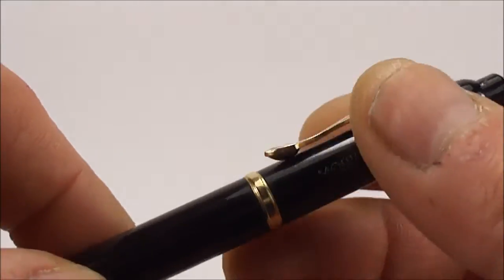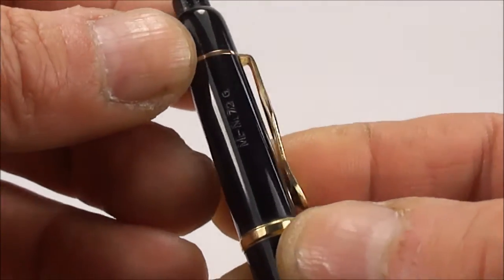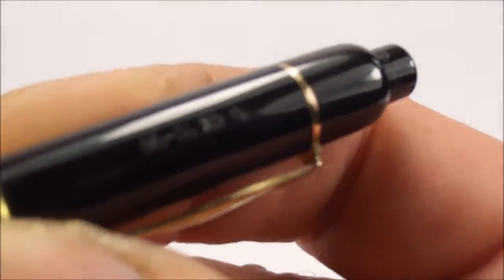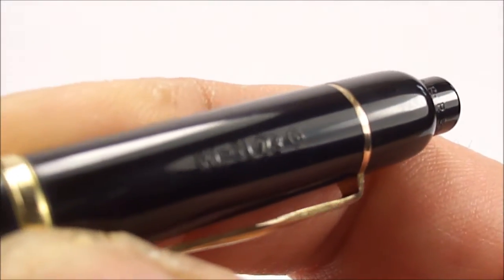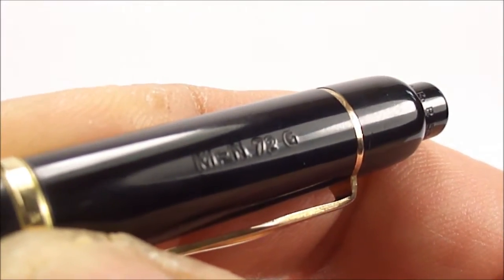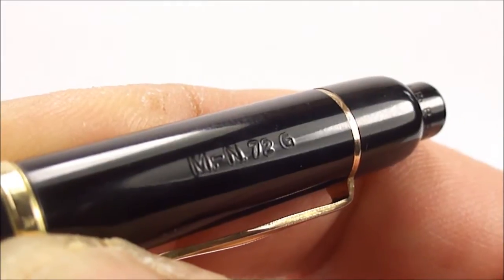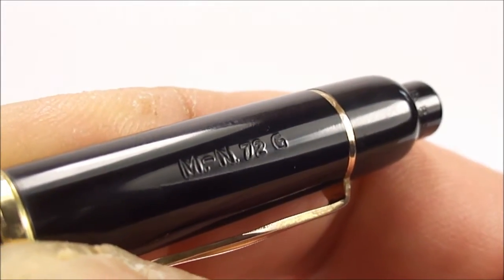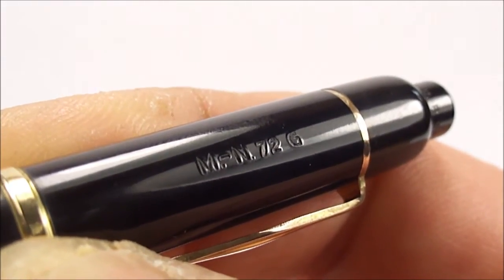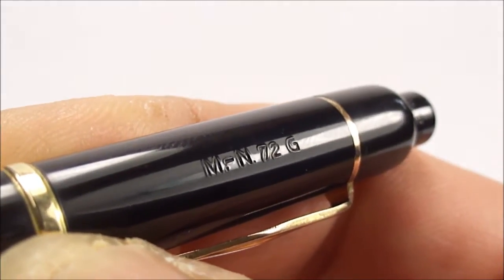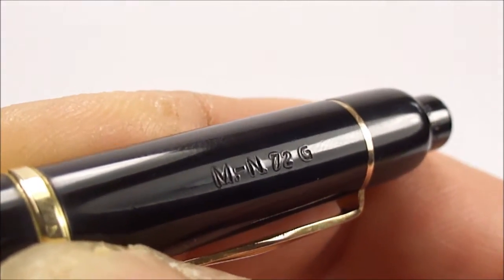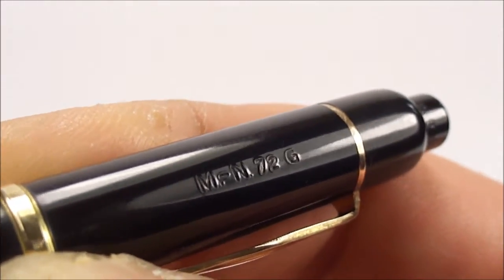Now let's just show you some of the imprints on this pencil. They're very, very clear and there we go. As you can see to the top there, it's actually got M dot dash N followed by 72 G which is the model.